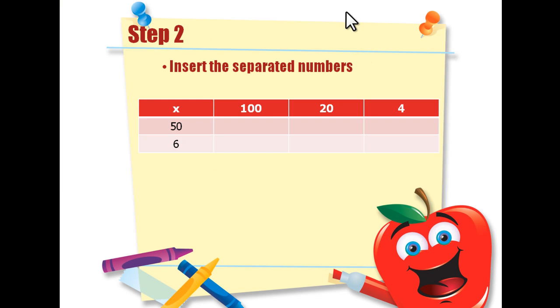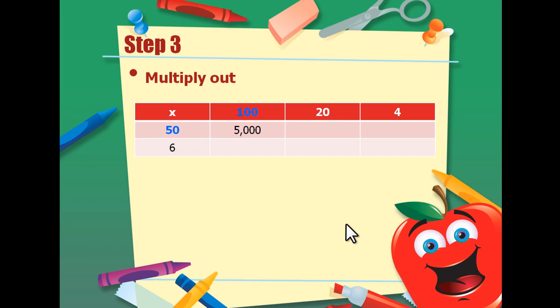Now that you have the numbers separated, you need to insert them into your matrix. I prefer to write the larger numbers across the top and the smaller numbers down the side. You can write them whichever way is easiest for you to understand. So step 3, you multiply out. 50 times 100 equals 5000.